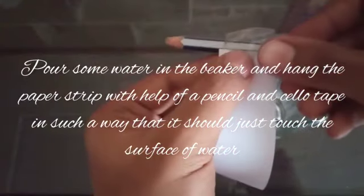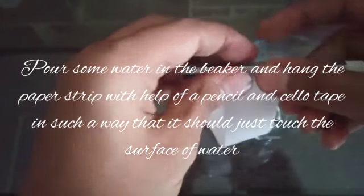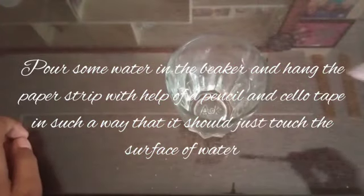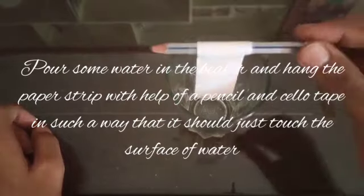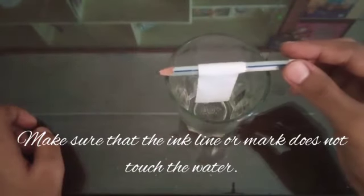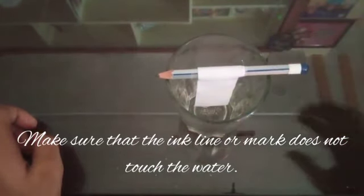Pour some water in the beaker and hang the paper strip with help of a pencil and cello tape in such a way that it should just touch the surface of water. Make sure that the ink line or mark does not touch the water.